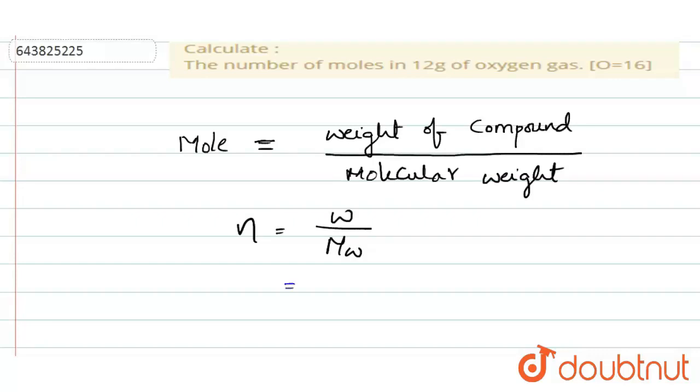Here, the weight of oxygen given is 12 grams and molecular weight of oxygen... oxygen gas means O2, that is why 16 into 2, that is equal to 32.